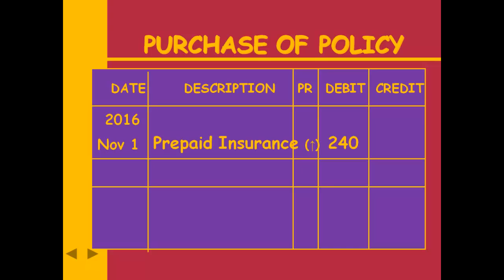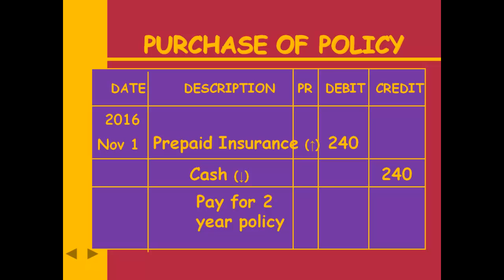What if we had paid just one month's insurance? Then it would be insurance expense, because by the end of the accounting period we'd have used it all up. But since we won't use it all up by year-end, we call it prepaid insurance. Since we paid cash, we credit cash. That is not an adjusting entry — it's a plain Chapter 2 entry.